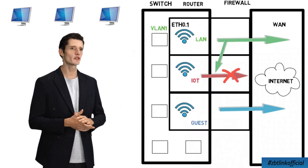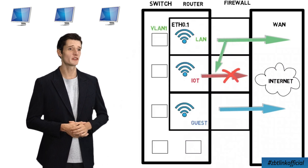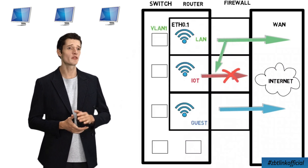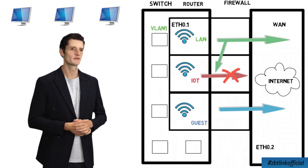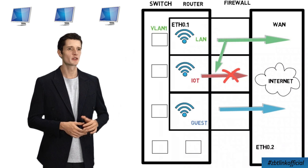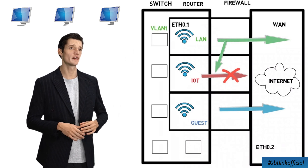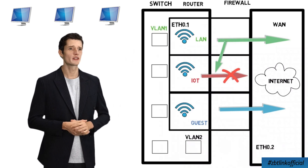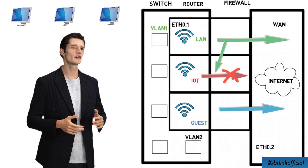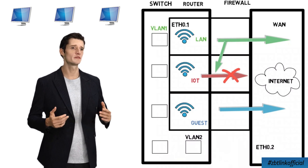But I can also assign ethernet interfaces to the firewall zones. If I had two physical interfaces on my router, I would create two physical LANs — and assign one to the LAN ports of the switch and one to the internet port of the switch.